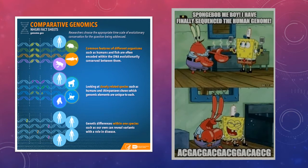DNA sequencing is also used in comparative genomics, and that's looking at things from an evolutionary standpoint in a variety of different ways. Researchers can use this looking at common features of different organisms. They can look at closely related species, just to see which genomic elements are unique to each.